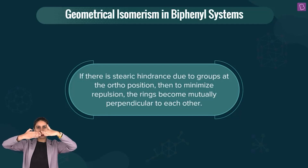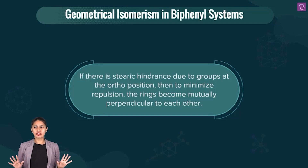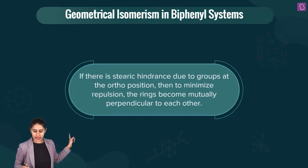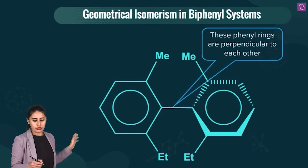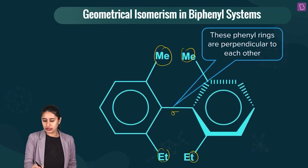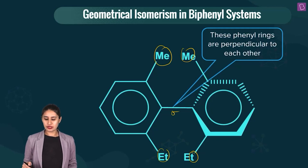Imagine the two rings being in the same plane. If there is some kind of repulsion coming in, they will certainly go out of the plane — not in the same plane as this phenyl ring here. This phenyl ring would rather decide to be in a different plane so that the repulsions can be minimized. So if there is steric hindrance due to groups at the ortho position, then to minimize repulsion, the rings become mutually perpendicular to each other. We have methyl, ethyl, methyl, ethyl with a sigma bond, and these phenyl rings are perpendicular to each other.